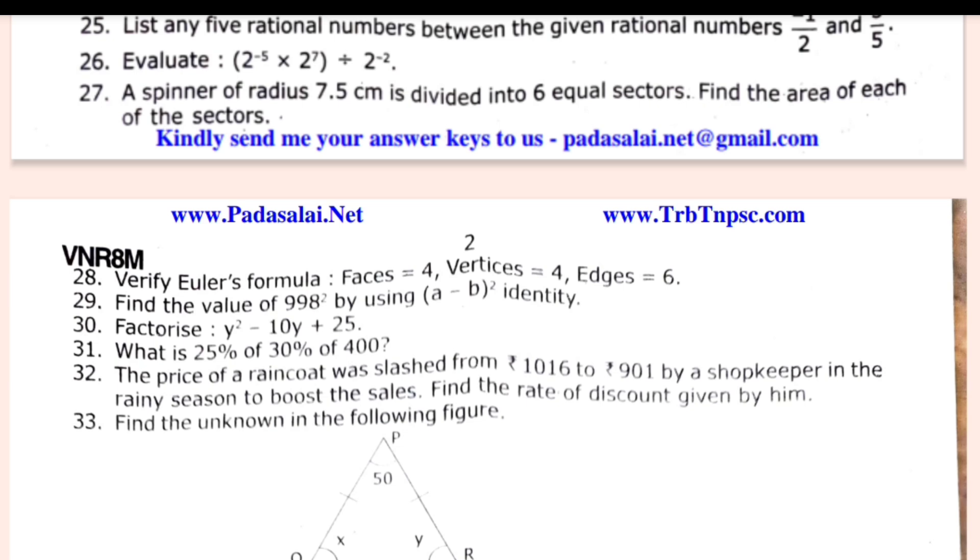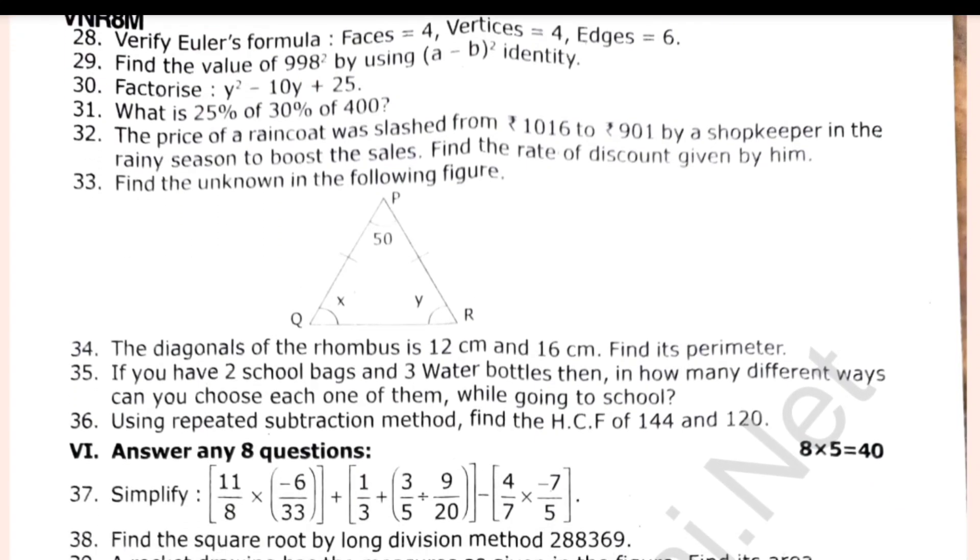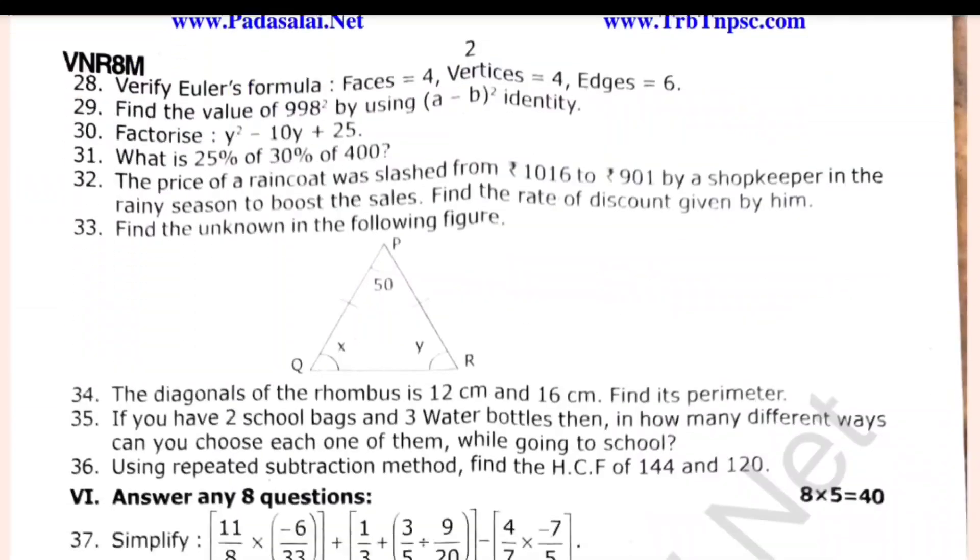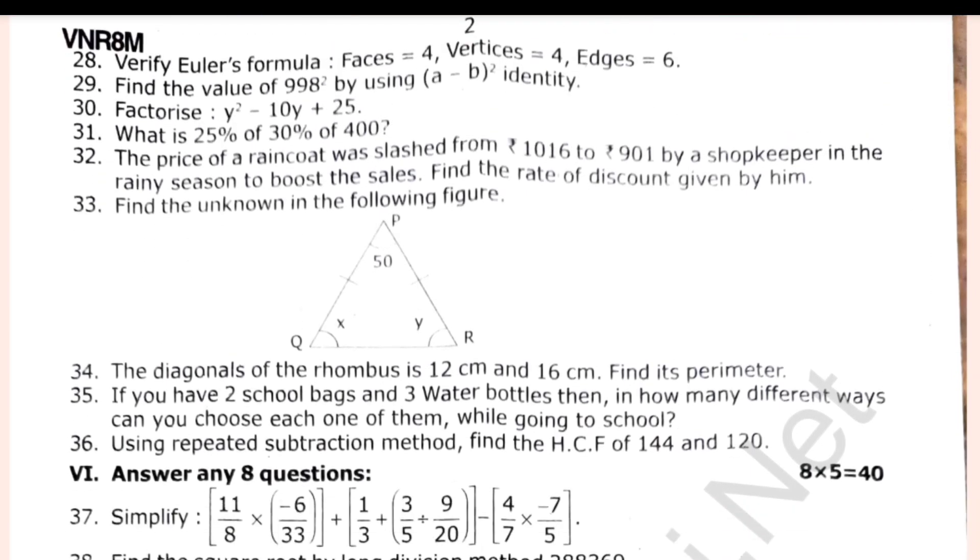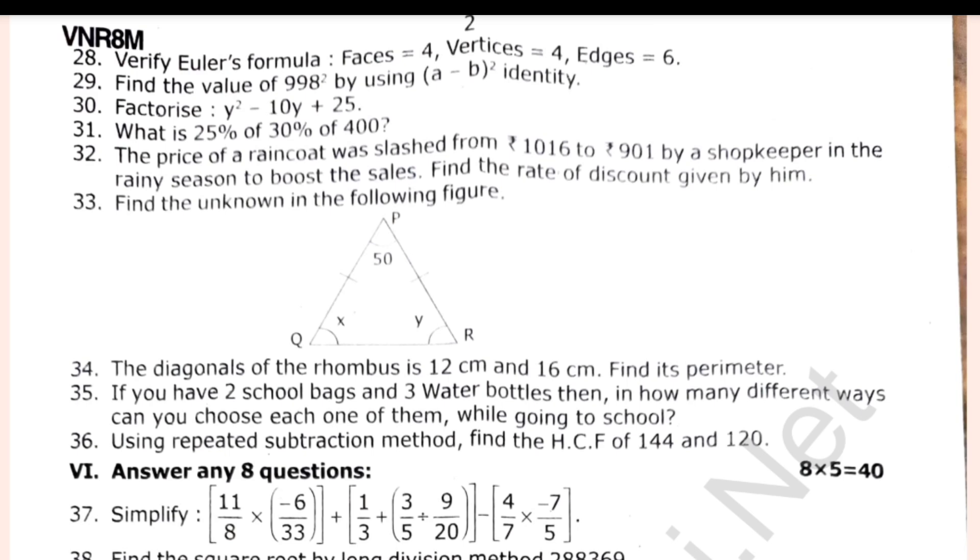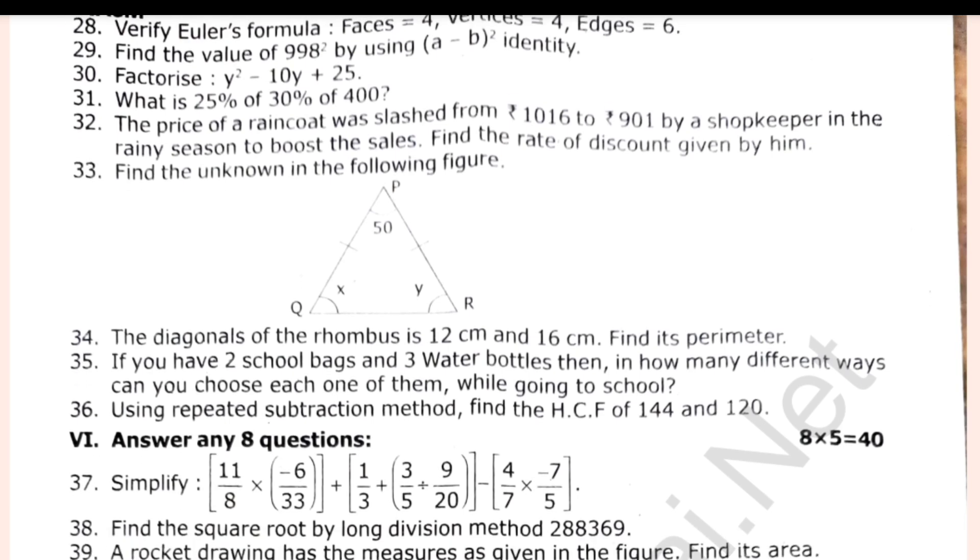So all of them are fine. And next, answer any 8 questions. This is 5 marks by 8, 5 are 40. Simplify 38. Find the square root by long division method. This rocket drawing has the measures given in the figure. Find its area.